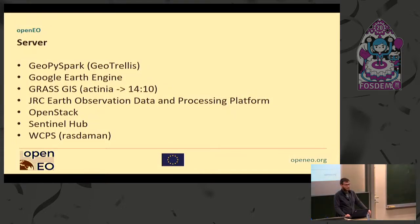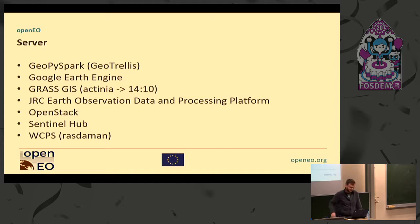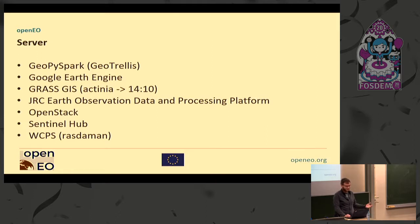We have several server implementations already that you can reuse or extend. There is the GeoPySpark and GeoTrellis implementation. There is a Google Earth Engine implementation — you can basically run our scripts on Google Earth Engine for free. There is a Grass GIS Actinia implementation — you can go to Marco's talk at 2 p.m. to get more about that. There is the JRC Earth Observation Data and Processing Platform from the European Commission. There is an OpenStack implementation, access to Sentinel Hub, and a server implementation for WCPS, which is in the end Rasdaman.